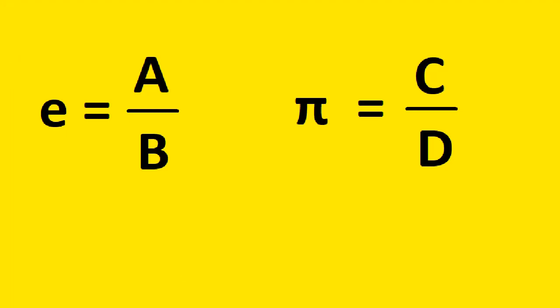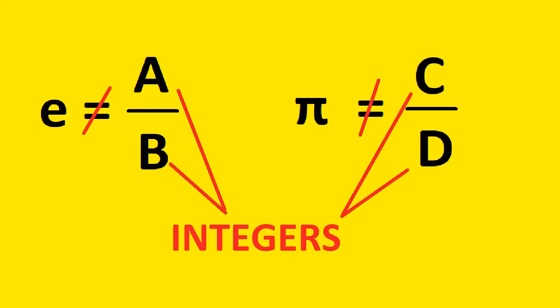We know that e and pi are not rational. Neither number can be written as the ratio of two integers.